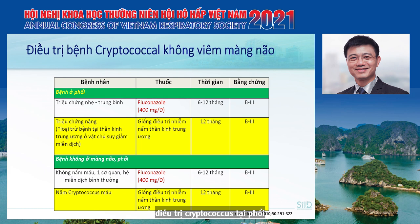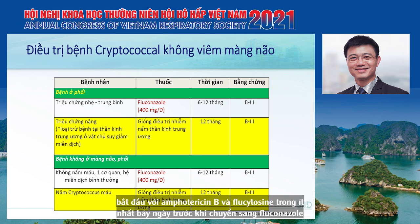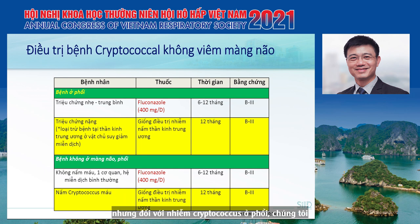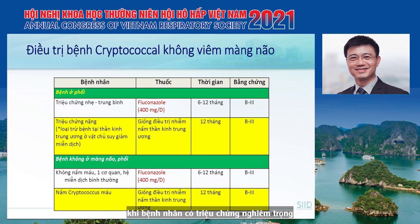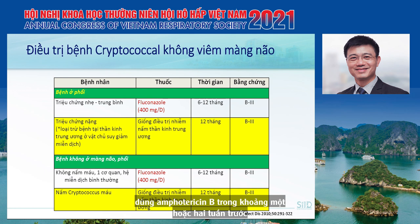Treatment of pulmonary cryptococcosis requires antifungal treatment with fluconazole, which differs from meningitis. In cryptococcal meningitis, we normally start with induction using amphotericin B and flucytosine for at least 7 days before changing to fluconazole. In pulmonary cryptococcosis, we can start with fluconazole without induction. However, in severe or immunocompromised patients, treatment would be the same as CNS disease—with amphotericin B induction for one to two weeks before de-escalating to fluconazole.